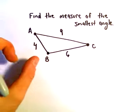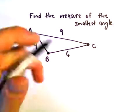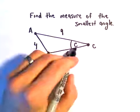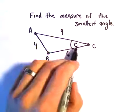So the side with shortest length would be our side here, AB, that has length 4. So that means, again, we're trying to figure out the angle here, the measure for angle C.